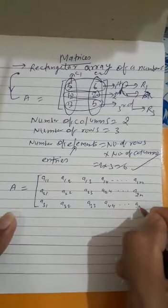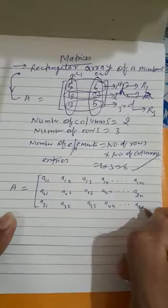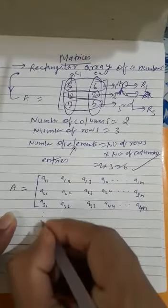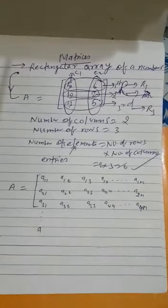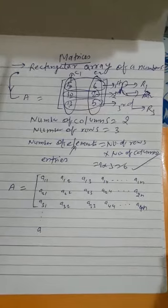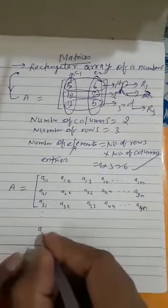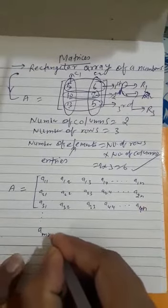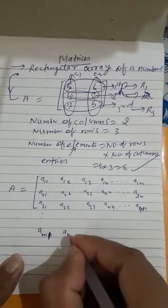ann, a4n, dot dot dot. And we are having, how to write last element? That means how many rows? So let us consider we are having m rows: am1, am2, am3, am4, dot dot dot amn.